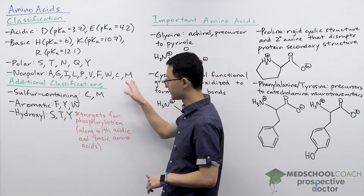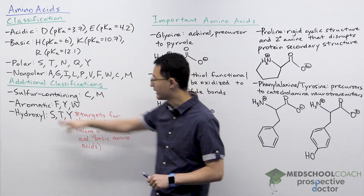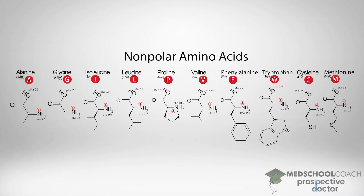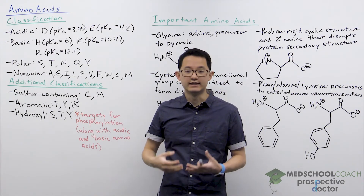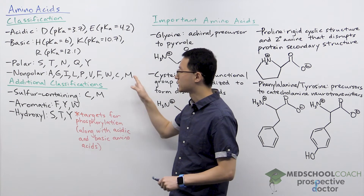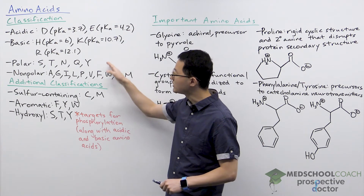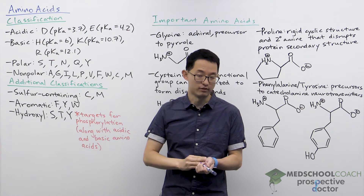For nonpolar amino acids we have a lot: alanine, glycine, isoleucine, leucine, proline, valine, phenylalanine, tryptophan, cysteine, and methionine. This is something you do need to have memorized for the MCAT — be able to classify each amino acid as acidic, basic, polar, or nonpolar.